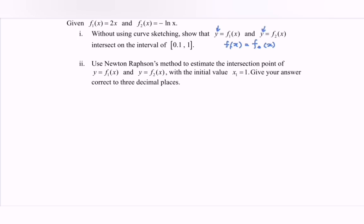Rewrite the equation: 2x = -ln(x), so 2x + ln(x) = 0. Then we can see f(x) = 2x + ln(x). The question asks to show that both functions intersect on the interval [0.1, 1].